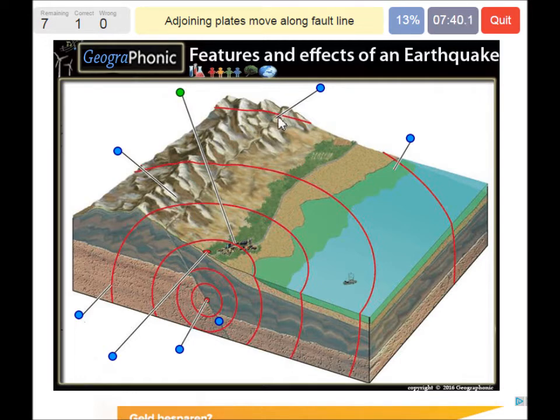So here we see a fault line. It may be also a fault scarp when you look closer to it. But basically it's two adjoining plates which move along a fault line.